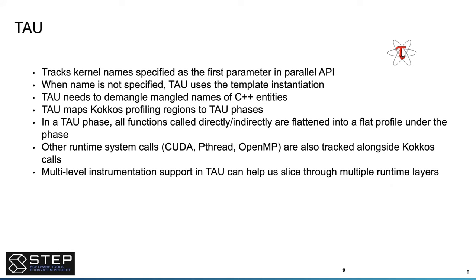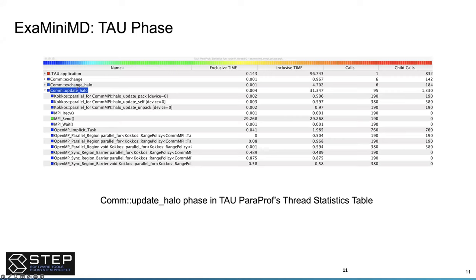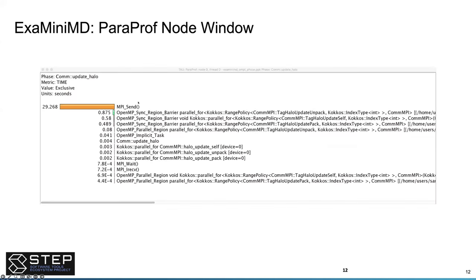TAU tracks the kernel name specified as the first parameter in the Kokkos API. When the name is not specified, it uses the template instantiation, demangles C++ entities, and maps Kokkos regions to TAU phases — in a phase you can see all calls made directly or indirectly. TAU also supports other runtimes: if Kokkos is using OpenMP, we use OMPT to show OpenMP runtime details, and similarly for pthreads, CUDA, ROCm, SYCL. This is a simple example from ExaMiniMD showing an update halo phase with push/pop region and a named parallel_for.